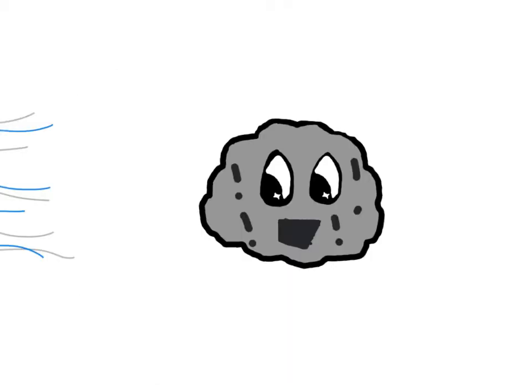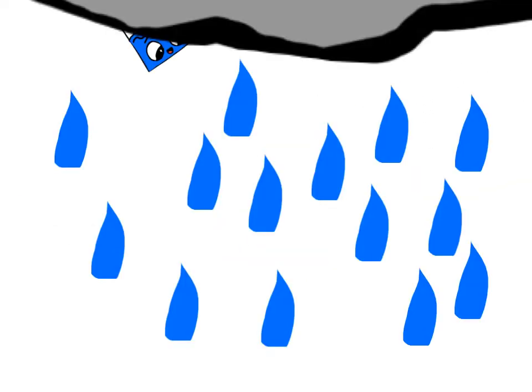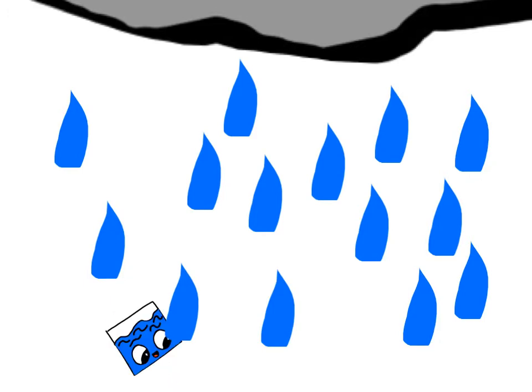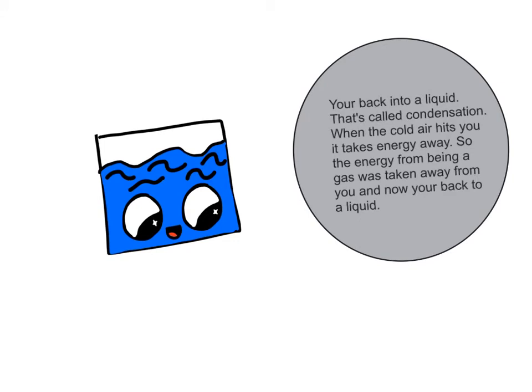Chill, look out for the cold air! Going from a gas to a liquid is called condensation. When the cold air hits you, it takes away energy. So the energy from being a gas was taken away from you, and now you're back into a liquid.